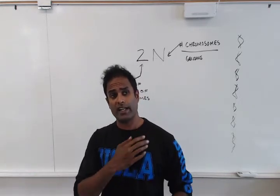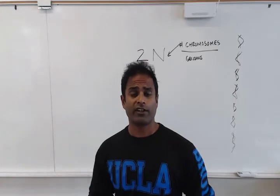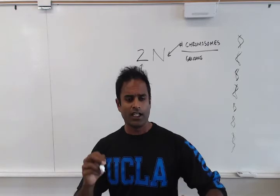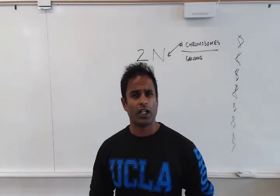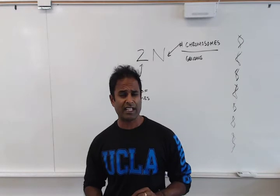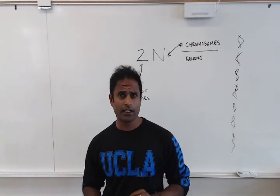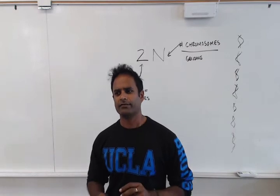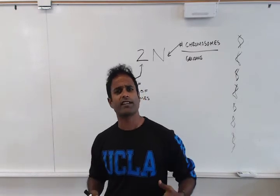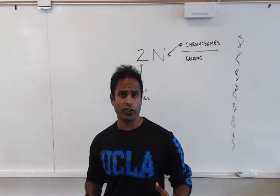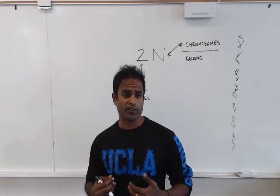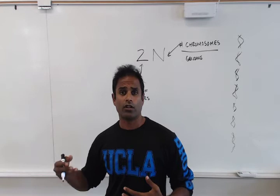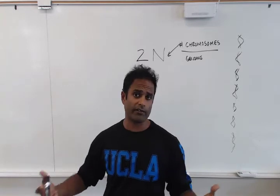There are many organisms that have different numbers of genomes. For example, I think the tardigrade, the water bear, has three genomes, so that's 3N. Salmon are 4N. Each organism has a different N number — our N number is 23, but a different organism might have an N number of 2, 6, 8, or whatever it may be.